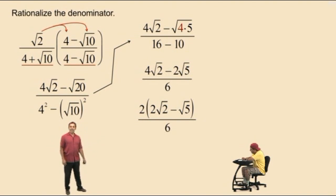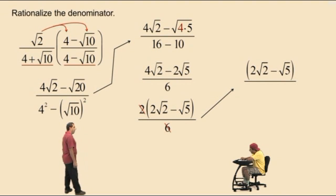And now we're still not done because we can reduce the 2 and the 6. And so let's write our final answer over there. Notice the 2 and the 6 cancel. That reduces to 1 over 3. And so our numerator is 2 square roots of 2 subtract square root of 5 over 3. Don't forget to circle or box your answer.